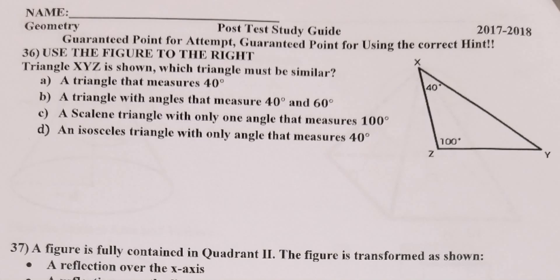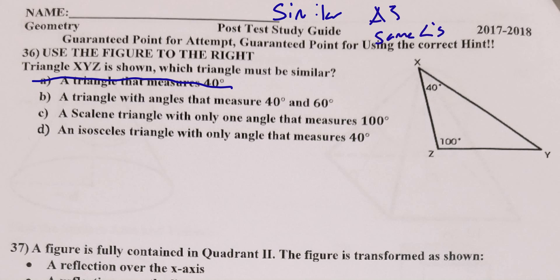Number 36: triangle XYZ is shown — which triangle must be similar? A triangle measuring only 40 degrees is impossible since all angles must sum to 180. A triangle with angles 40 and 60 degrees would require an 80-degree third angle — those don't match our triangle's angles of 40, 90, and 50 degrees — so B is not similar.